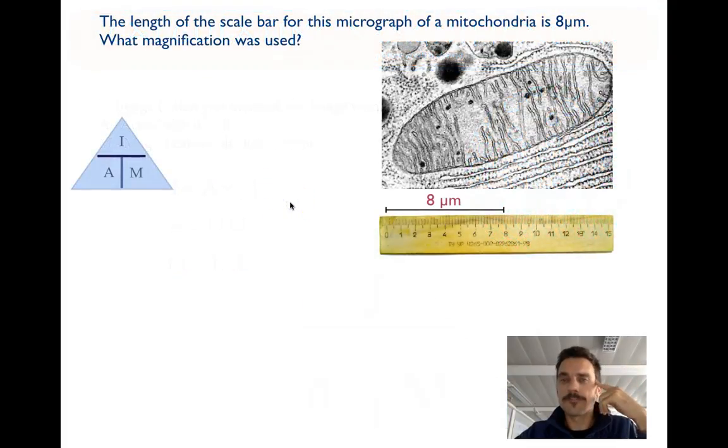So let's dive into a couple examples here. This is a mitochondria. It says the length of the scale bar for this micrograph of a mitochondria is 8 micrometers. What's the magnification? Here's a huge hint. Please pay attention to this one. When you're given a scale bar right here, use that. So take advantage of the scale bar.